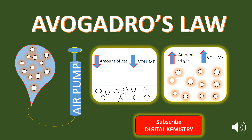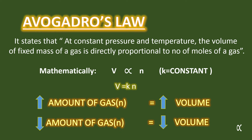Hello and welcome to Avogadro's Law. Avogadro in 1813 relates the volume and the number of particles of an ideal gas at constant temperature and pressure in the form of Avogadro's Law. Avogadro's Law states: at constant pressure and temperature, the volume of a fixed mass of a gas is directly proportional to the number of moles of a gas.